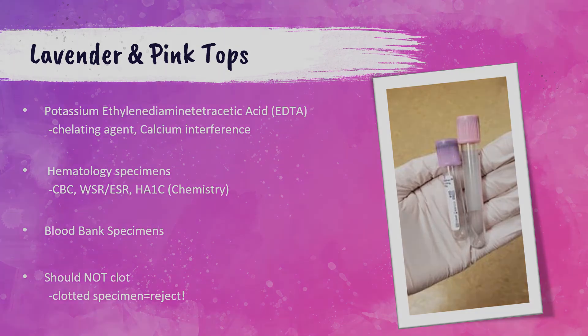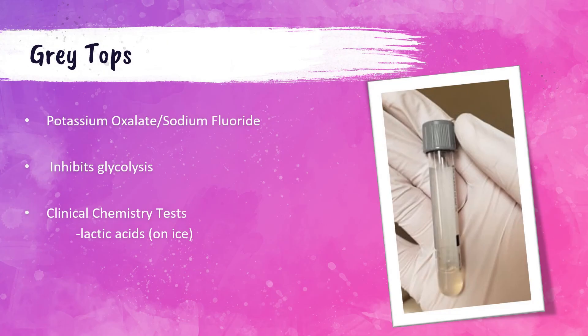The last tube in the order of draw is the gray top tube. This contains either potassium oxalate or sodium fluoride, which inhibits glycolysis. It can be used in situations where a centrifuge isn't immediately available and the patient needs a glucose test. Glucose is rapidly consumed by red blood cells if left to sit, so if specimens are left without centrifuging for hours and then run, the glucose result will be falsely decreased. The gray top can be used in settings like nursing homes or home health visits where the sample is collected and then sent to the lab a while later.